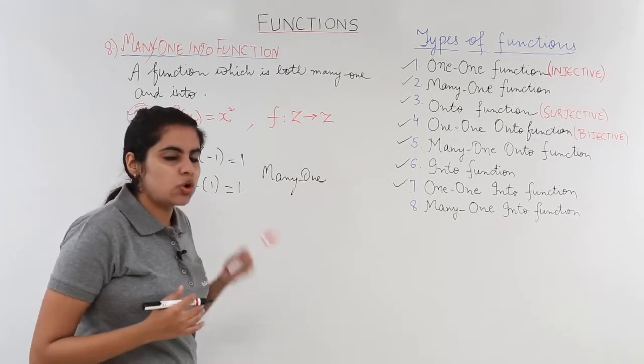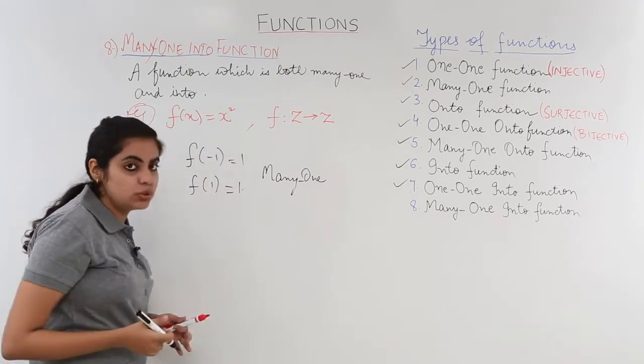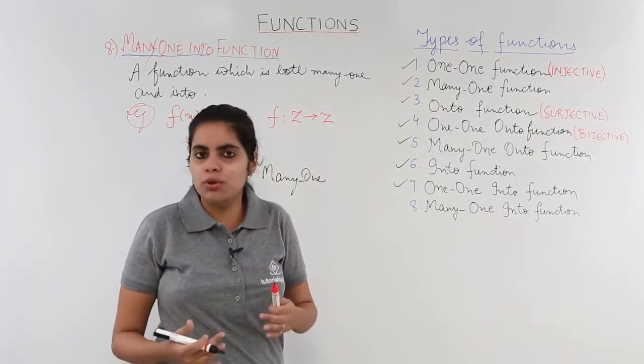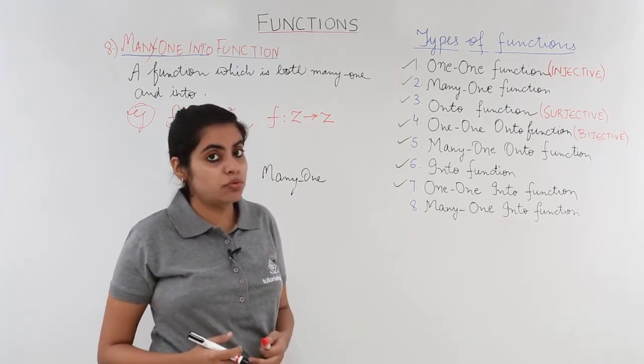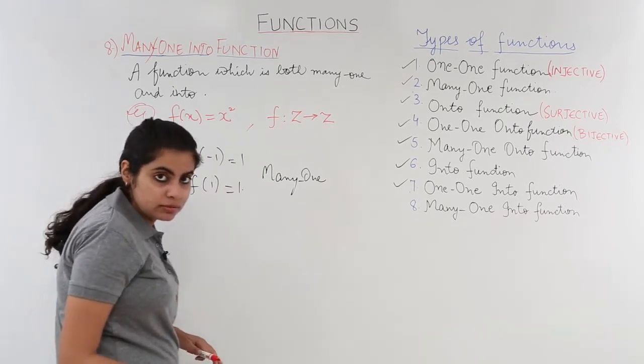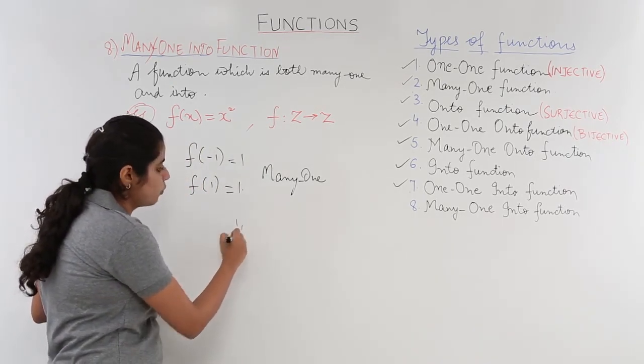Now let's see whether it is onto or into. If we put different values, do we get something which is range equal to co-domain? Or do we get something which is range a subset of co-domain? Let us put x = 1. When x = 1, the function will get the value of 1.